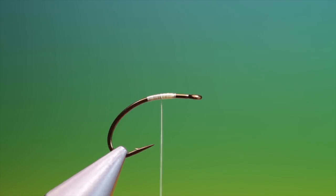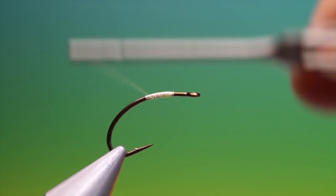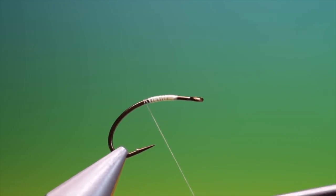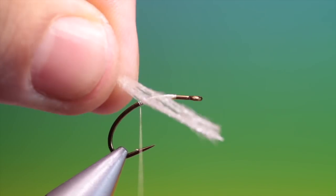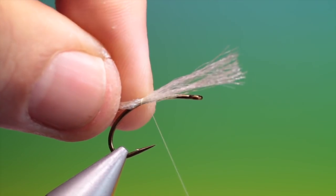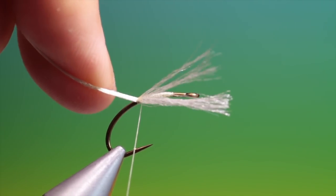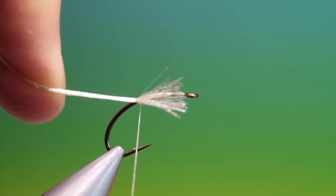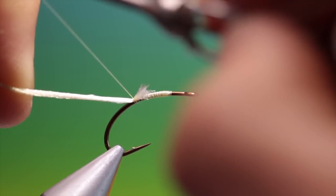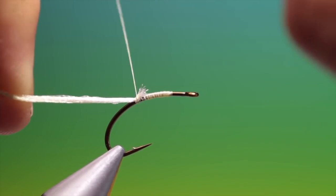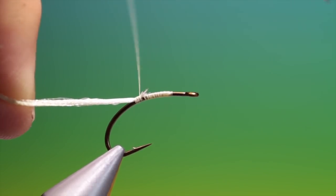Remember to control your thread. Once we're there we need a length of cream Antron body wool and just put one turn, keeping pressure on your tying thread, pull that through and then we can just tie that down up here.